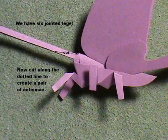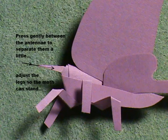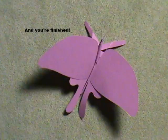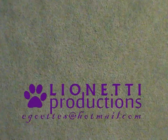Now cut along the dotted line to create a pair of antennae. Press gently between the antennae to separate them a little. Adjust the legs so the moth can stand. And you're finished.